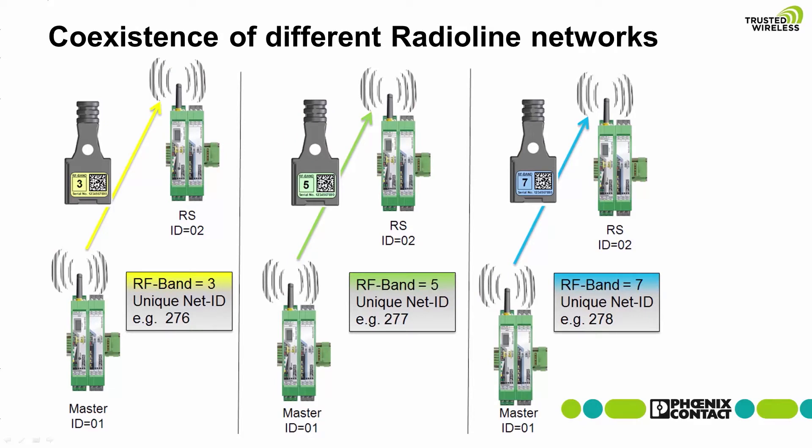In the 900 megahertz band, there is one ConfStick available. Depending on how many wireless networks are to be operated in parallel, it is also possible to use ConfSticks with the same RF band but different net IDs.